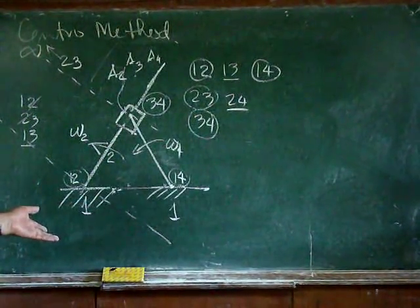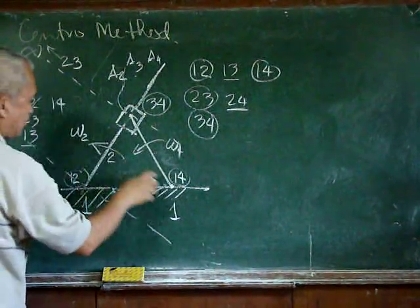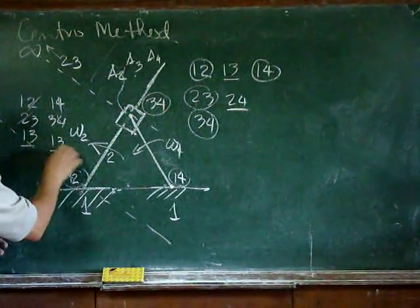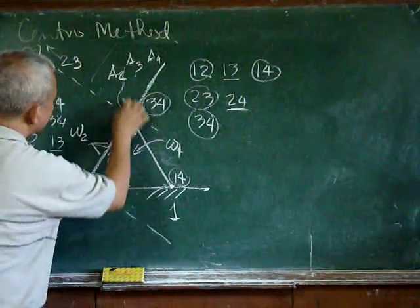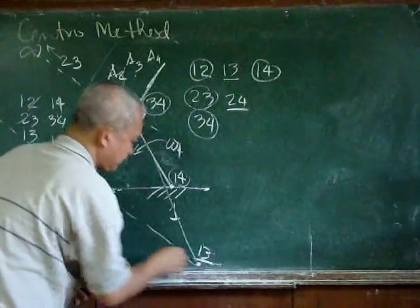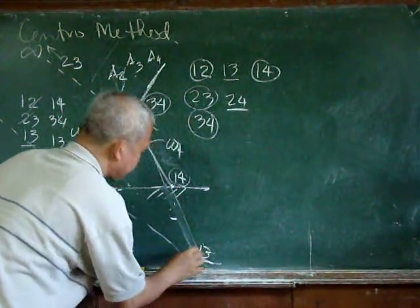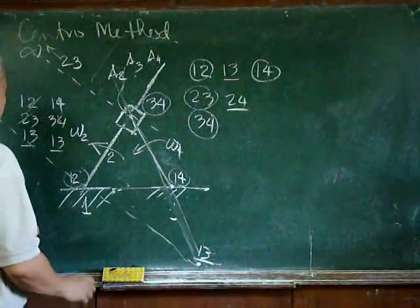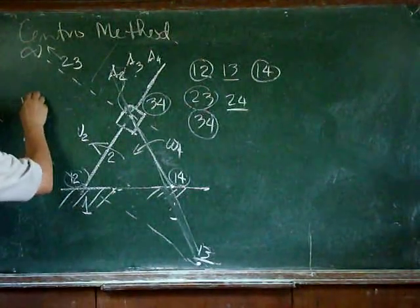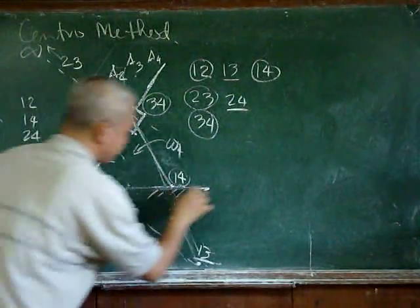Using 1-4 and 3-4, we can also locate 1-3 here — so 1-4 and 3-4 intersect to give us 1-3. Then for 2-4: using 1-2 and 1-4, the center 2-4 must lie along this line.